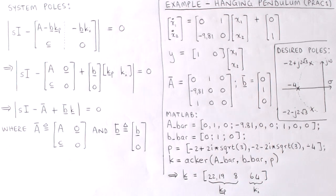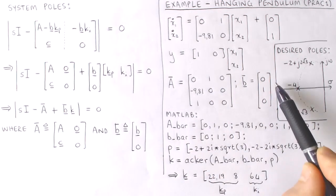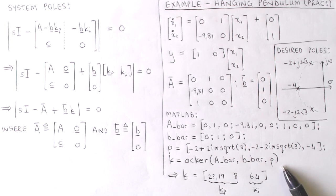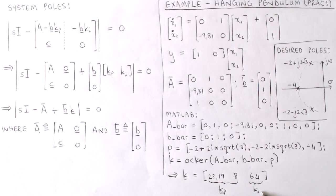The augmented system now contains three states, and we choose the closed-loop poles to be in a Butterworth configuration with a natural frequency of 4 radians per second. To illustrate how one would use the regulator design procedure to design the gain k, let's look at a few MATLAB commands. This line creates the matrix A-bar, this line creates the vector B-bar, and this line specifies the desired closed-loop poles. We then use MATLAB's place function to find the gain k that would place the closed-loop poles in the desired locations. The resultant gain vector k is given by this row vector, where the first two elements are the proportional feedback kp and the last element is the integral gain ki.